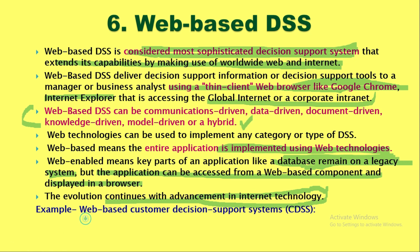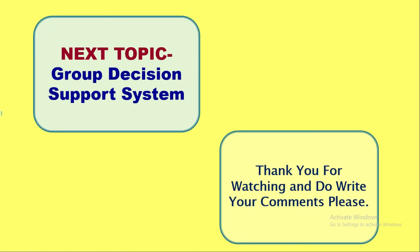The best example is web-based customer decision support systems. Multiple websites like Amazon and Flipkart use web-based customer decision support systems for analyzing patterns of customer buying and surfing, analyzing which products are in demand and which are not, and in which geographical location. This is all about types of decision support system.